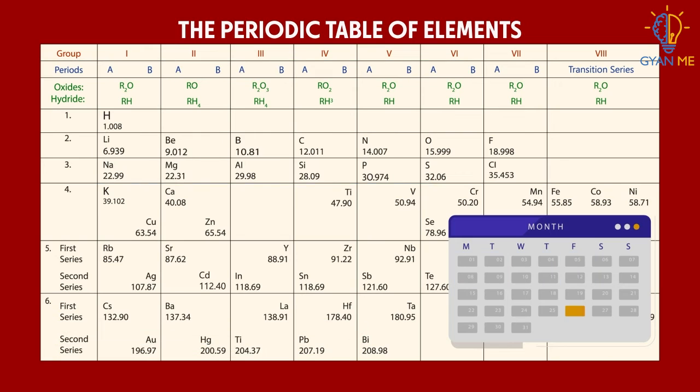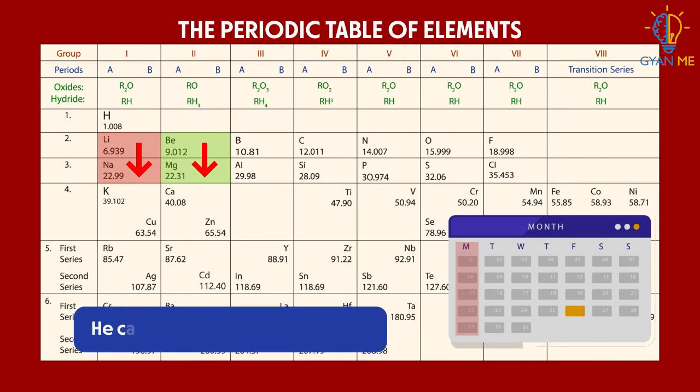Just like we have Monday, similar days in the week nicely placed one below the other in the column vertically. In Mendeleev's table also, elements with similar properties like sodium, potassium, or beryllium and magnesium are placed one below the other in a column. And he called these columns as groups.